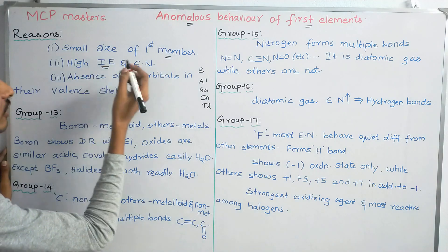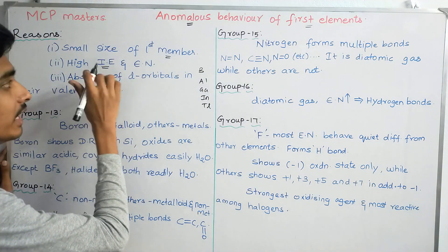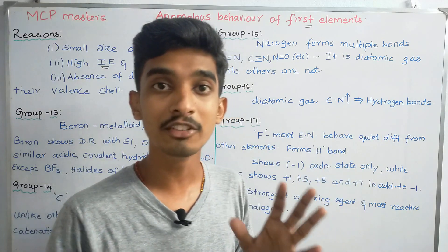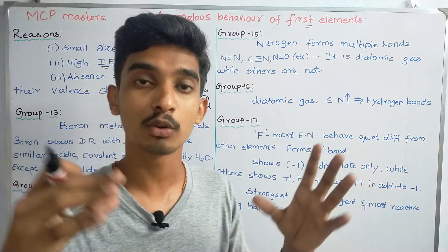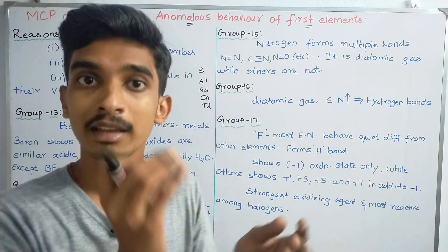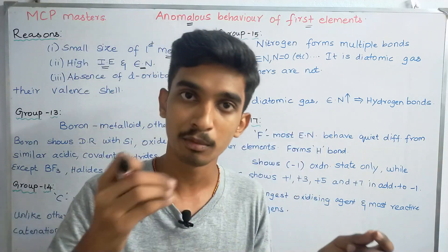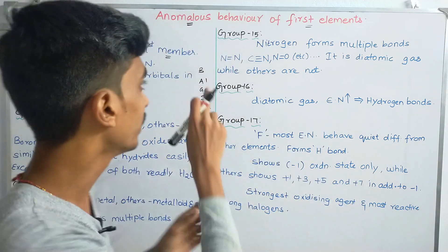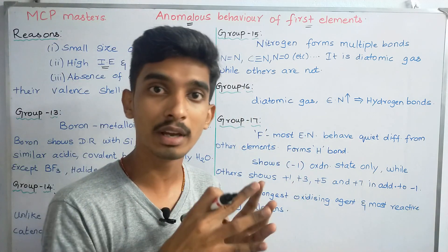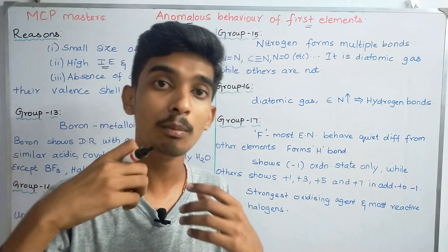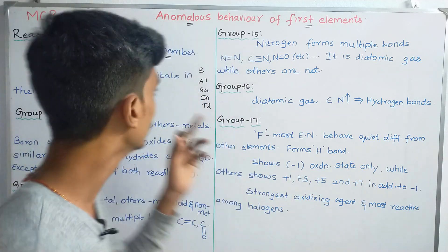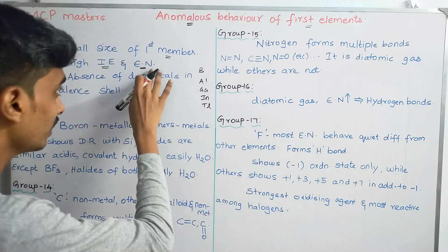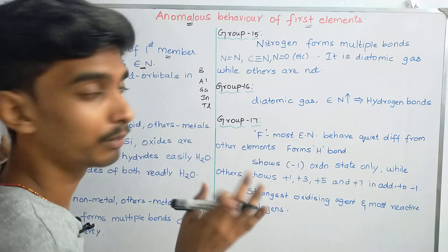The second reason is high ionization enthalpy and electronegativity. The first members have very high ionization energy compared to the other elements in the group. So the first element has very high ionization energy and electronegativity.